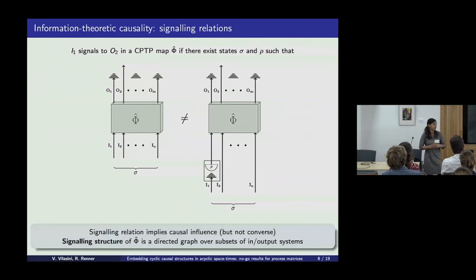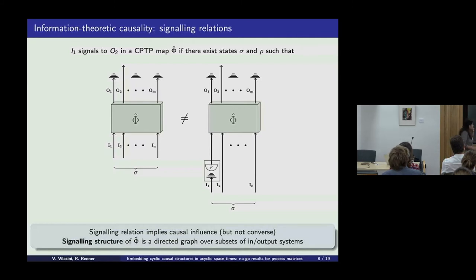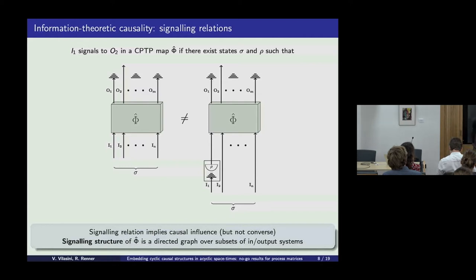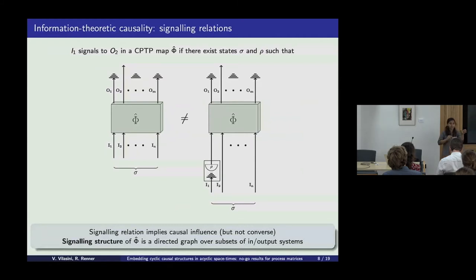On the information-theoretic side of things, we can model causality through signaling relations. Given a CPTP map, we can infer whether some input system I1 signals to some output system O2 by checking whether tweaking just some input states on I1 creates a difference in O2. There are many different ways to define signaling and a lot of them are not equivalent. This idea of signaling allows us to operationally infer the existence of causal influence. In this work we're going to consider signaling as our main way to infer causal relations. The signaling structure of a map or complicated network of maps will be a directed graph where the nodes are subsets of input and output systems.